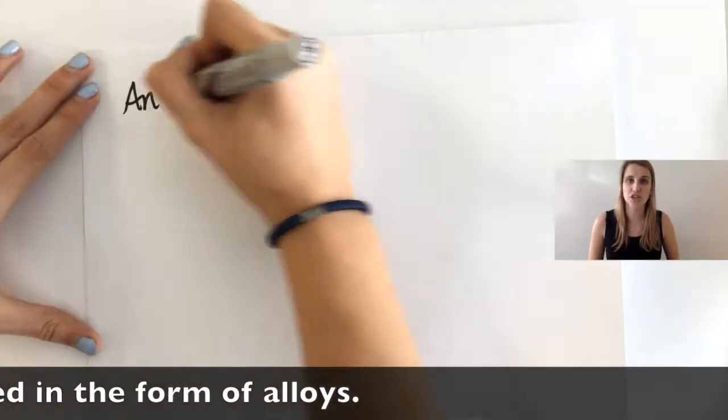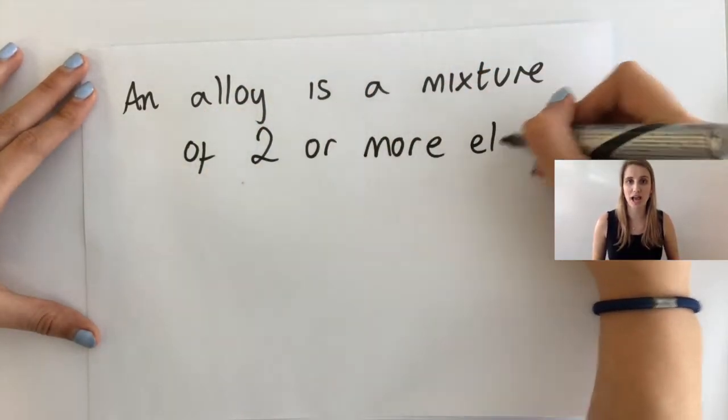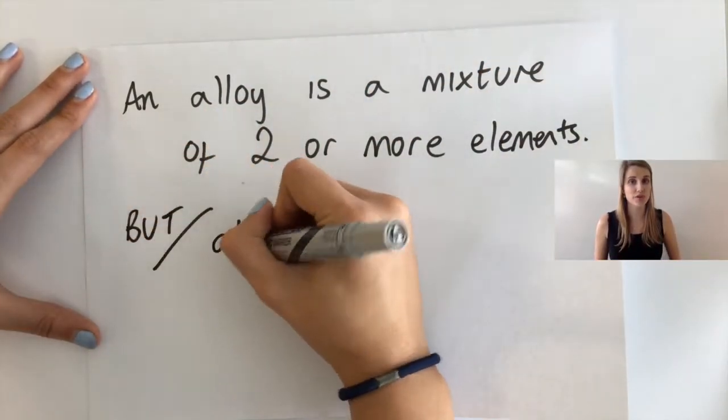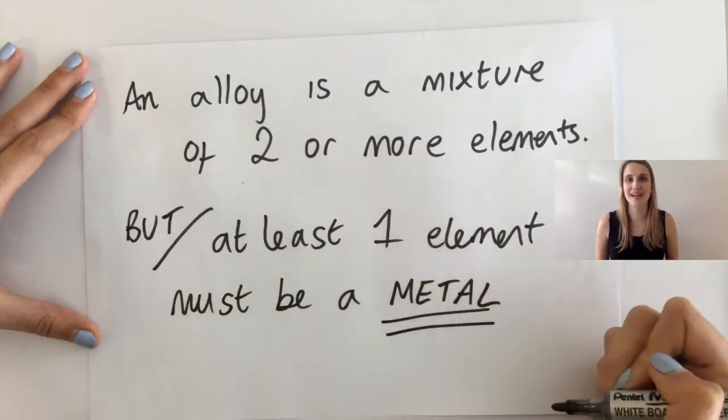The definition that we're going to use for an alloy is that it's a mixture of two or more elements where at least one of those elements is a metal. It can be more than one, but it must be at least one.